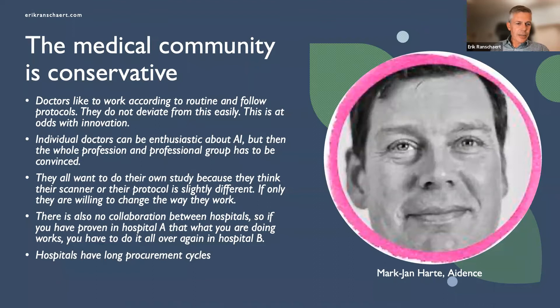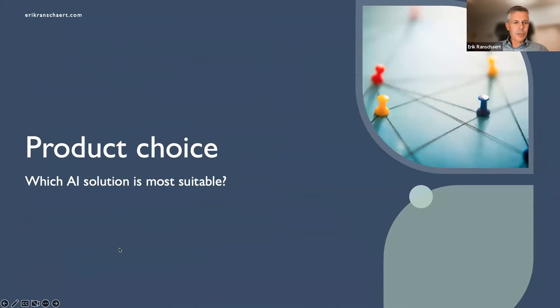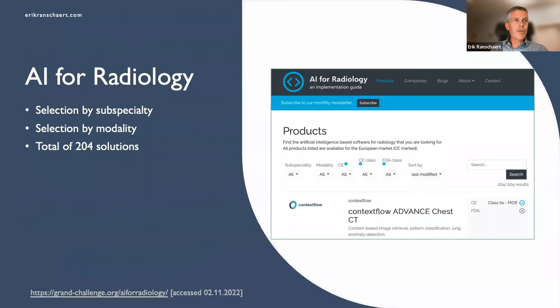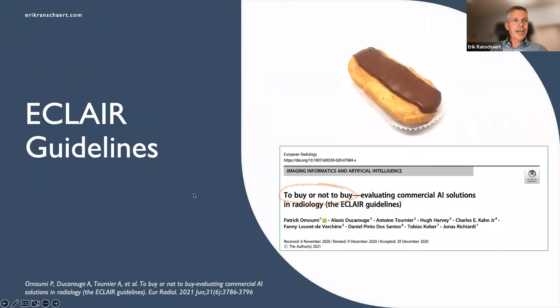What kind of solution should we choose? There is an interesting website called AI for Radiology where you can go and select the type of solution you want to learn more about. You can filter by subspecialty, modality, type of CE mark, and more — providing a lot of ways to find relevant information about the solution you are looking for.